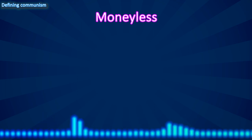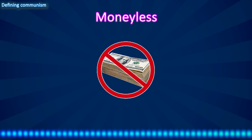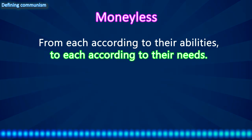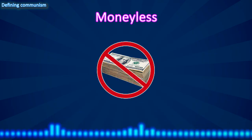Now let's look at the next feature of communism. Communism is moneyless — there is no such thing as money. No money also means no profit motive and no market economy. Goods and services are no longer sold for financial gain. Instead, goods and services are distributed based on people's needs. As the slogan goes, to each according to their needs. The word needs is defined broadly — it includes things you need for a high quality of life, what you need to survive and to thrive. When communism is fully developed, all products and services are free, and people work without being paid. All work becomes voluntary.